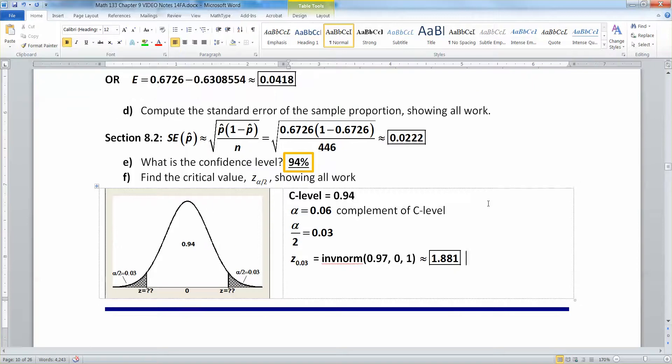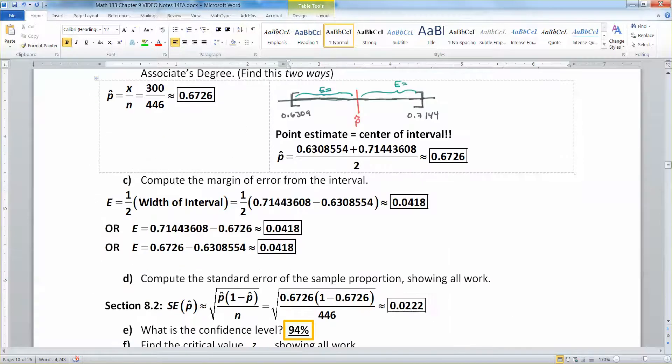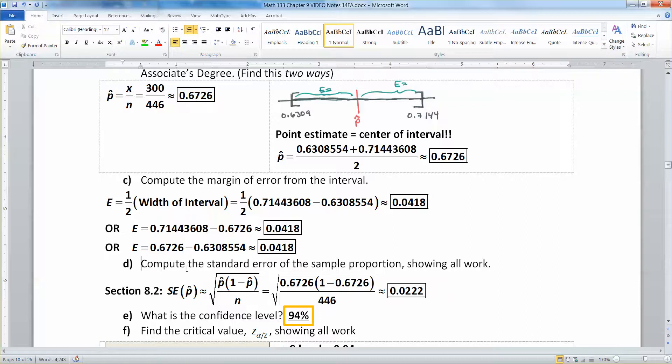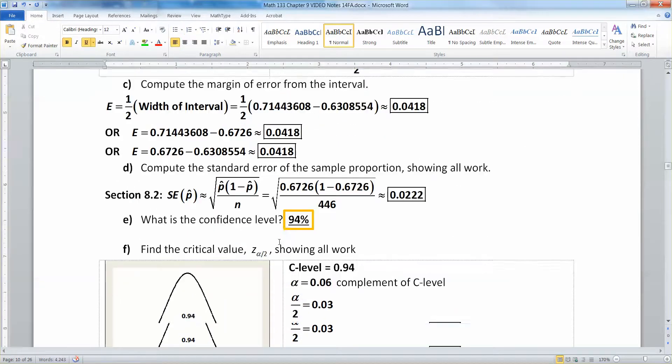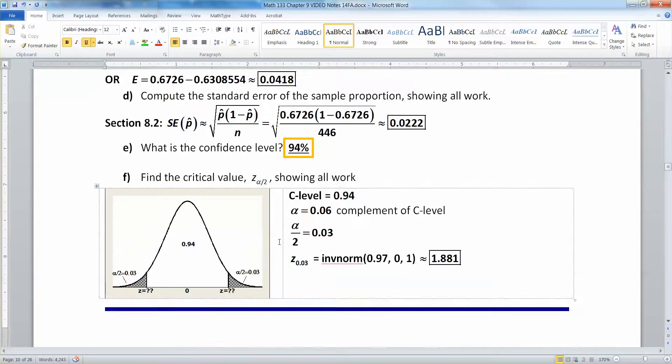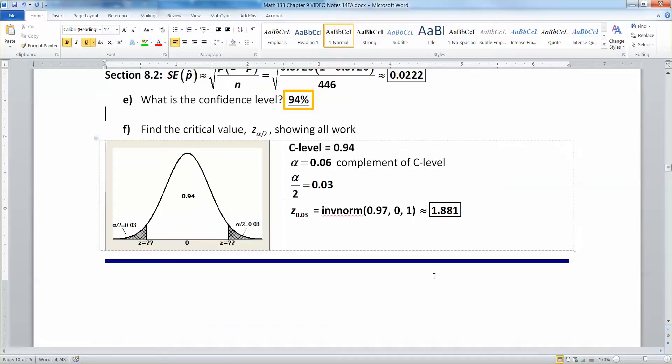We're all done with section 9.1. We now know how to read computer output and answer a whole bunch of questions about that computer output. And we realize that might be very handy for exams and other items. I'll see you back here for section 9.2. That's when we're going to make confidence intervals again, but it's going to be for the mean instead of proportions.